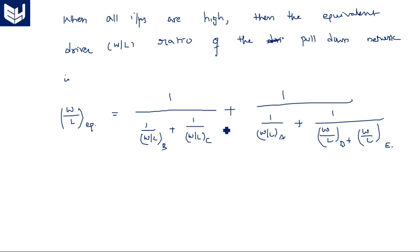Similarly, we can also calculate the output low level, but that is of no immediate use here. We are primarily finding the width-to-length ratio relation among these transistors for the NMOS realization of the complex logic design Z = A·(D+E) + BC, whole bar. That is sufficient. Thank you.